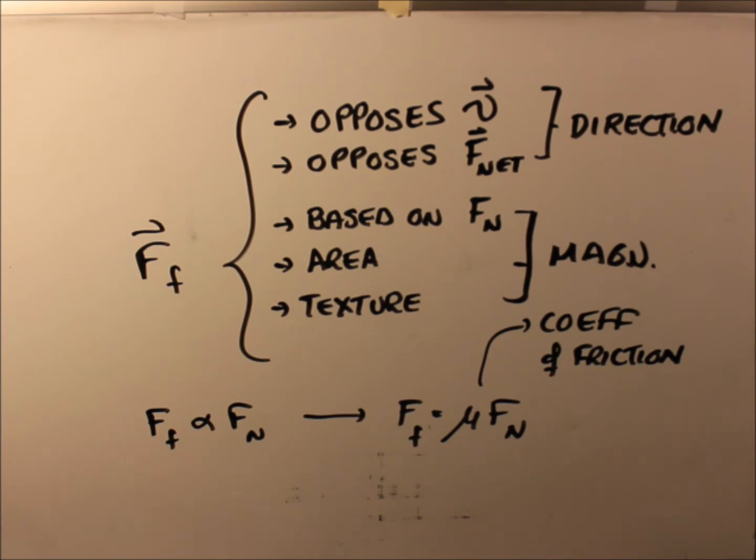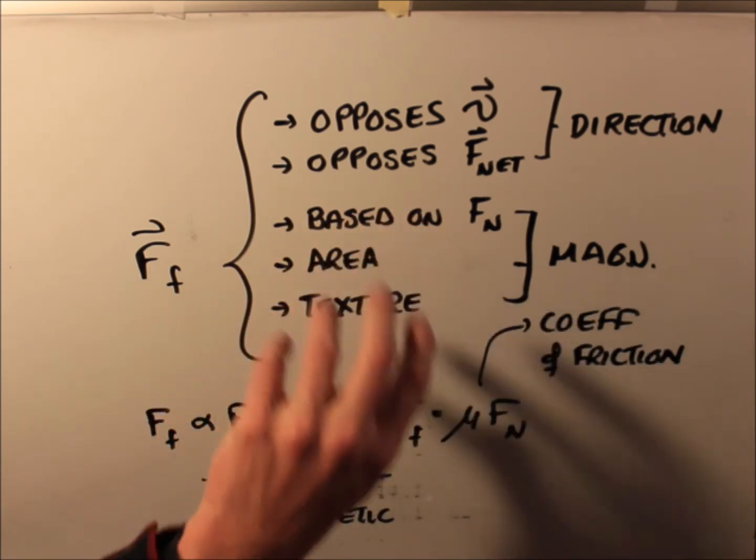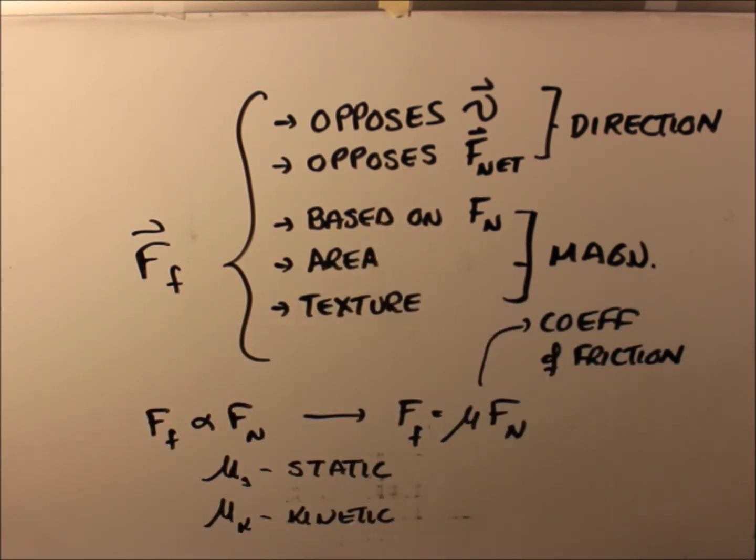And the coefficient is broken into two different considerations. This is the static case, and this is the kinetic case. And when your two surfaces are close together or stopped and they're not moving, their surfaces interlock a little bit more. In the case of two surfaces that are moving, they tend to bump a little bit and they run a little smoother. And so the coefficient of friction tends to drop as the objects begin to move. And this is ignoring any other damages or circumstances that might occur in these situations.